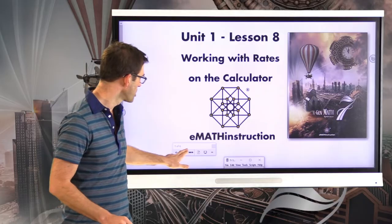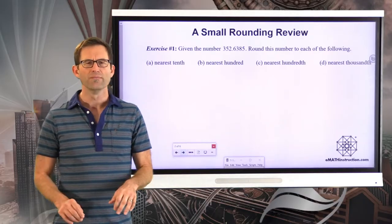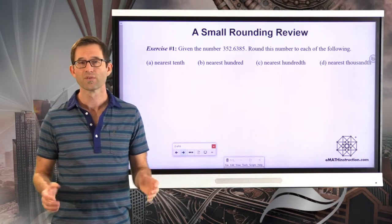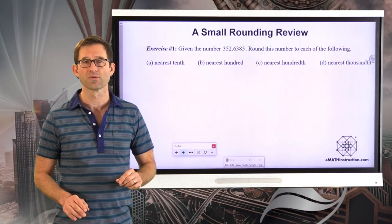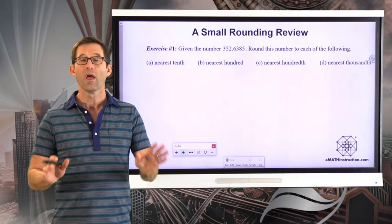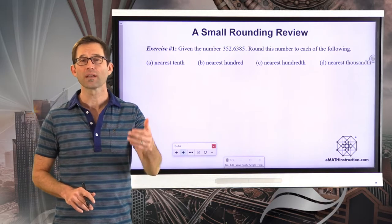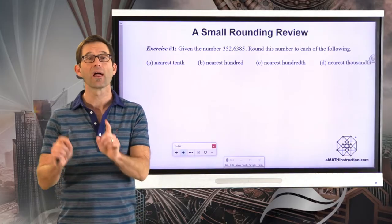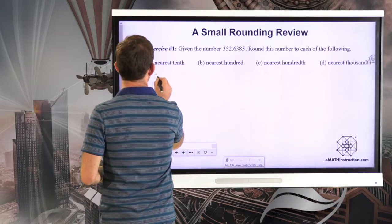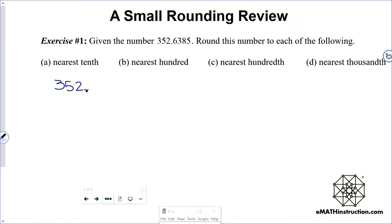Let's jump right into exercise number one — a small rounding review, because a lot of times in the real world when we do calculations, we have to round our final answers. No need for the calculator at this point. Given the number 352.6385, round this number to each of the following. Rounding is all about saying which number a particular number is closest to given a certain level of accuracy.